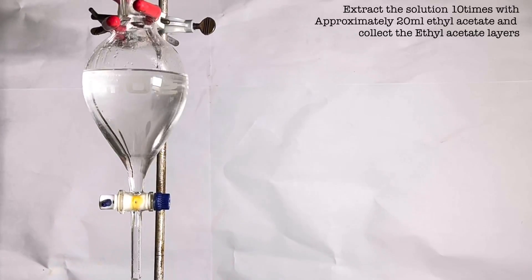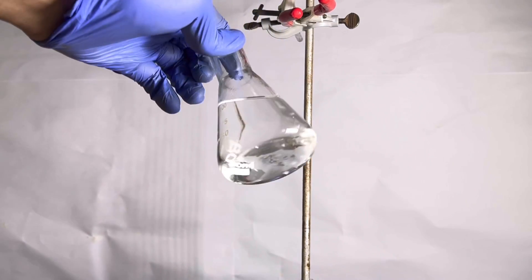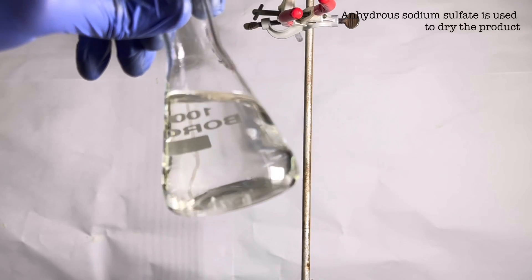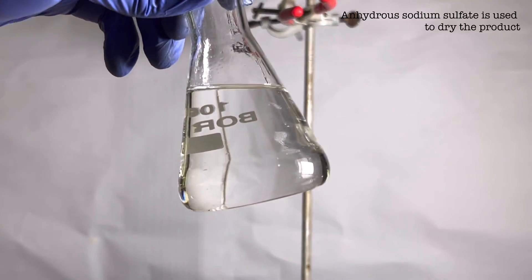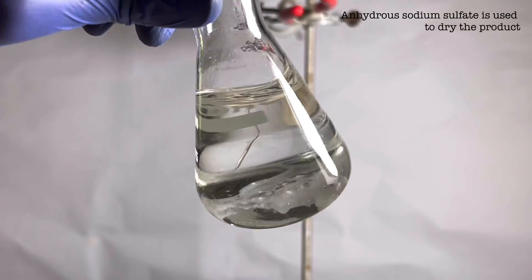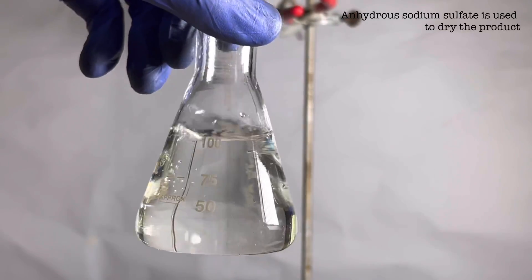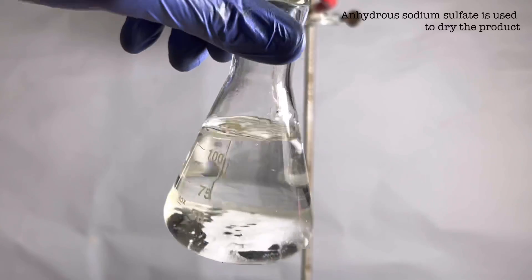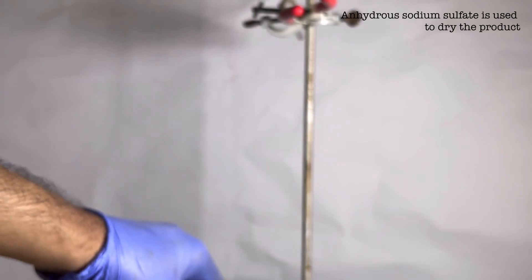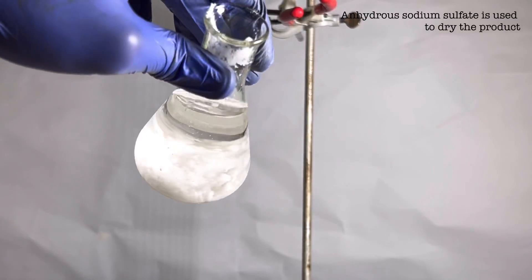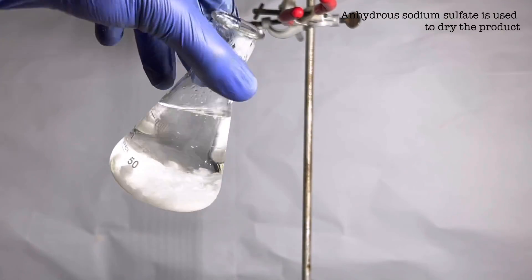The conical flask containing the ethyl acetate layer is taken. We will remove water by adding anhydrous sodium sulfate. Initially on adding the sodium sulfate it sticks to the bottom of the flask as you can see here. This means that there is more water in the content and more sodium sulfate needs to be added. So more anhydrous sodium sulfate was added until we see free flowing of the salt in the bottom of the flask. This indicates that the solution is free from water.